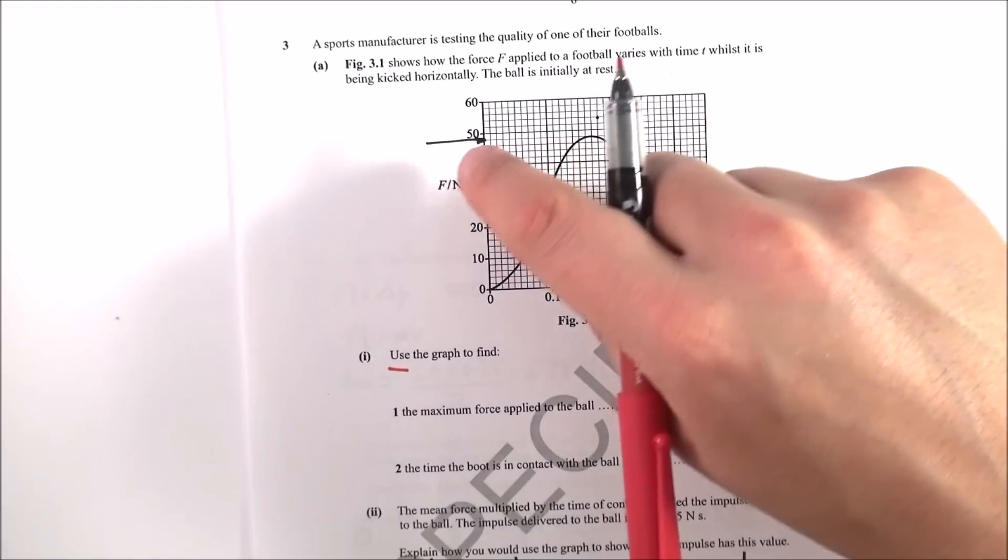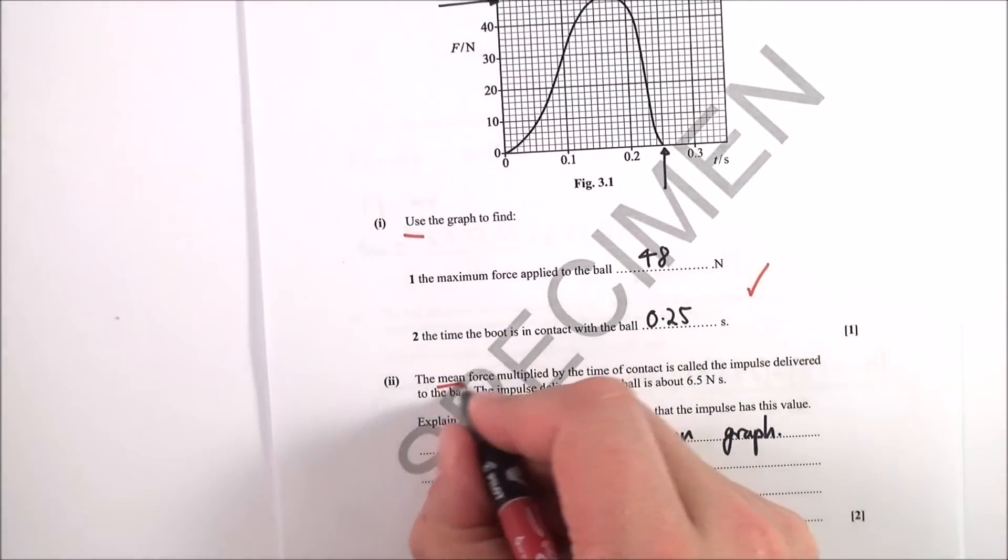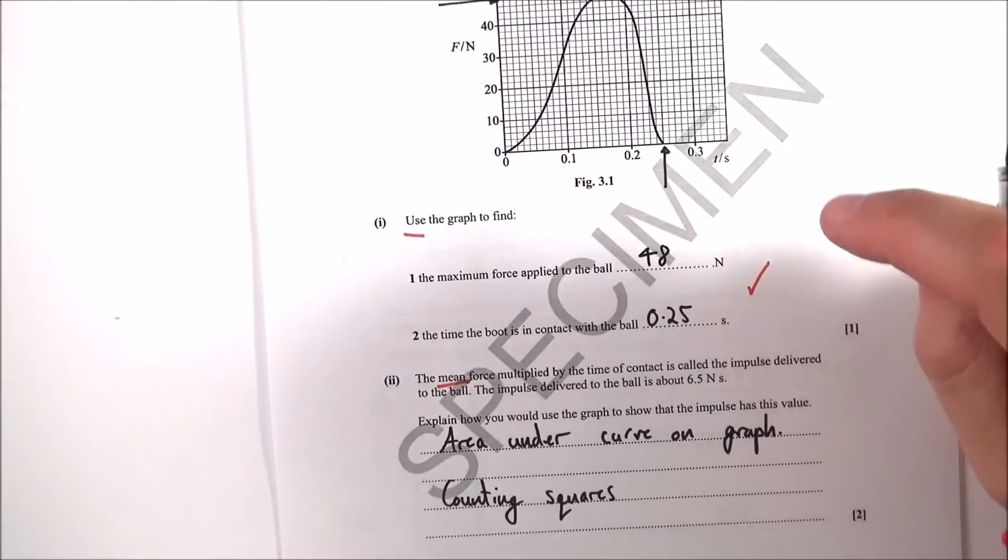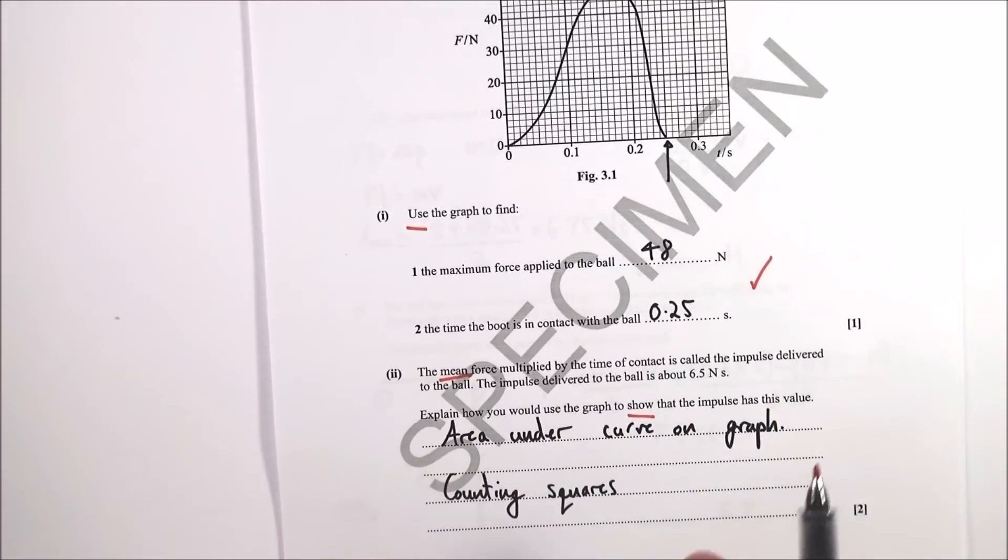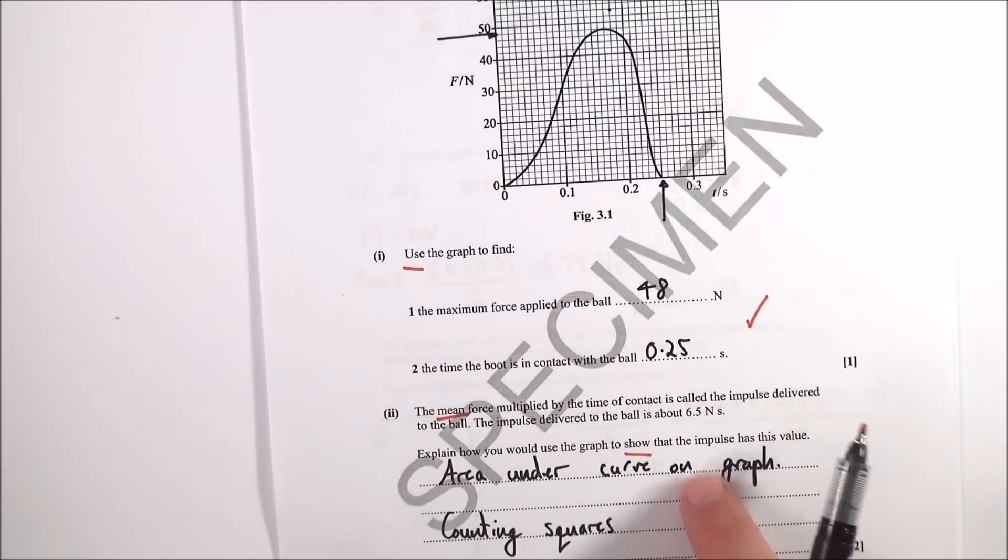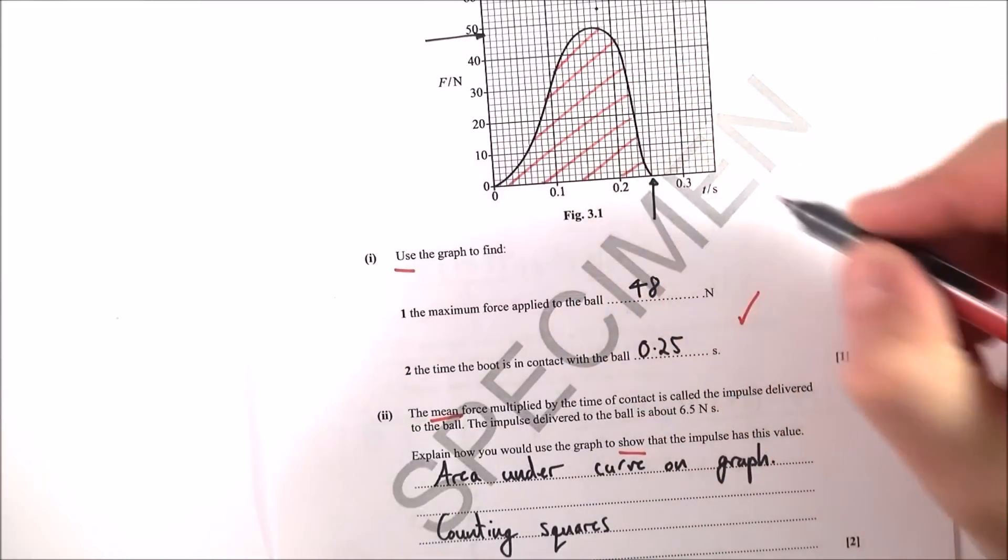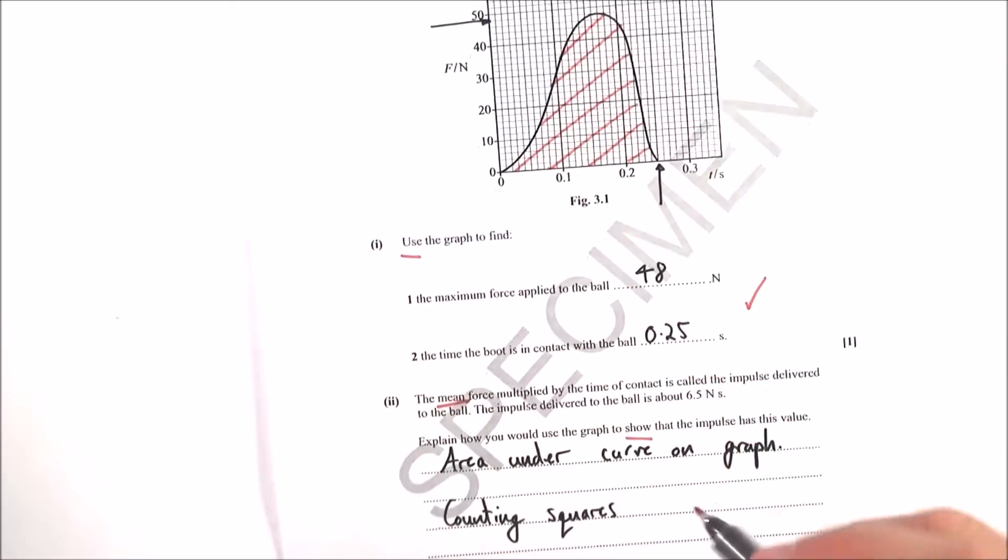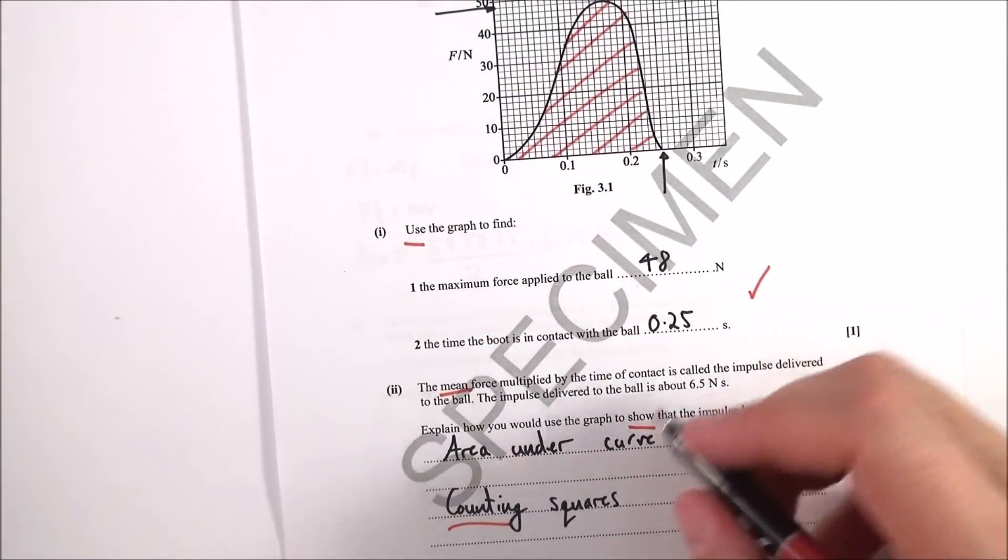Now it says that the mean force applied multiplied by the time is called the impulse, and in this case it's about 6.5 newton seconds. Explain how you use the graph to show the impulse has this value. Well, you use the area under the curve. The area under the curve is equal to the impulse because it equals force multiplied by time. How do you find that? You count the squares. One mark for saying area under the curve, the second mark is the method, which is counting squares.